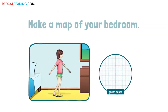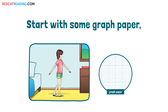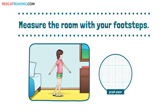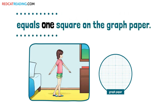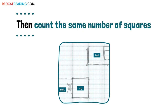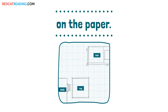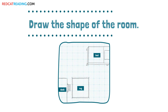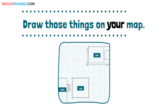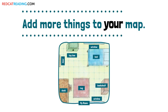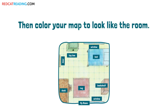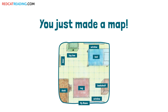Making maps. Make a map of your bedroom. Start with some graph paper or use a ruler to make your own. Measure the room with your footsteps. Each footstep equals one square on the graph paper. Count your footsteps in both directions. Then count the same number of squares on the paper. Draw the shape of the room. Now count the number of footsteps to different things in the room. Draw those things on your map. Add more things to your map. Count your footsteps to doors and windows too. Then color your map to look like the room. You just made a map.